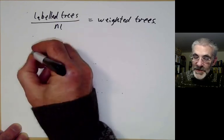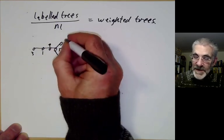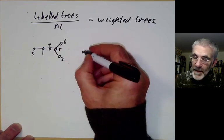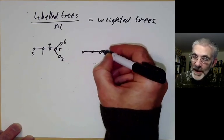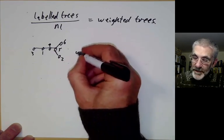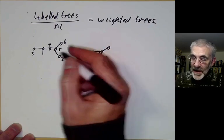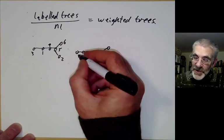We might label this as 1, 2, 3, 4, 5, 6. There are n factorial ways to permute these labels, but these don't always give you different labeled trees. For example, if I permute the labels 2 and 6, I get this tree here. You can see that these two are actually the same tree.